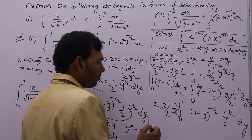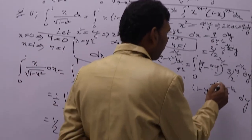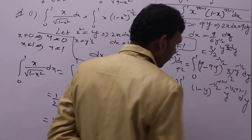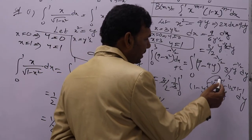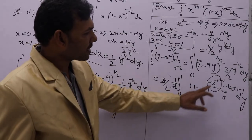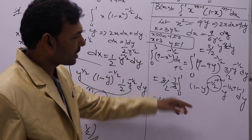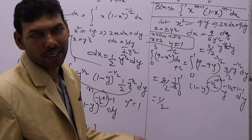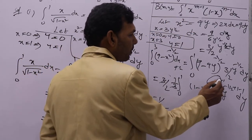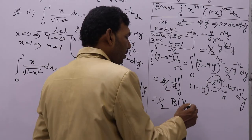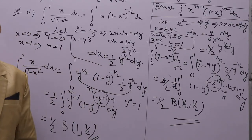To get the beta function form, we apply the plus 1 minus 1 technique. Minus 1 by 2 plus 1 is 1 by 2. So we get 1 minus y whole power 1 by 2 minus 1 into y power 1 by 2 minus 1 dy. That is exactly y power m minus 1 into 1 minus y whole power n minus 1. So both m and n are 1 by 2, giving Beta(1/2, 1/2). Both integrals are now expressed in terms of the beta function.